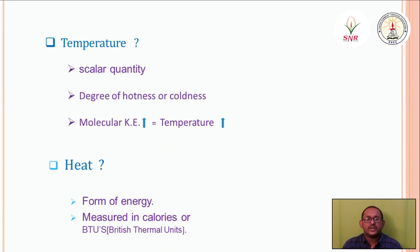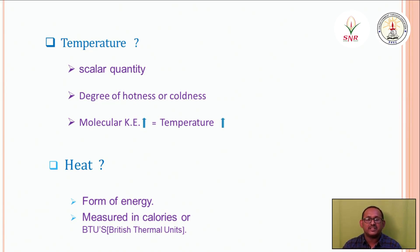Temperature is a scalar quantity. There are two quantities — scalar and vector — but temperature lies in the scalar category. It is measured in terms of hotness or coldness of an object. Molecules move faster as an object is heated and the temperature increases. Heat is a form of energy measured in terms of calories.